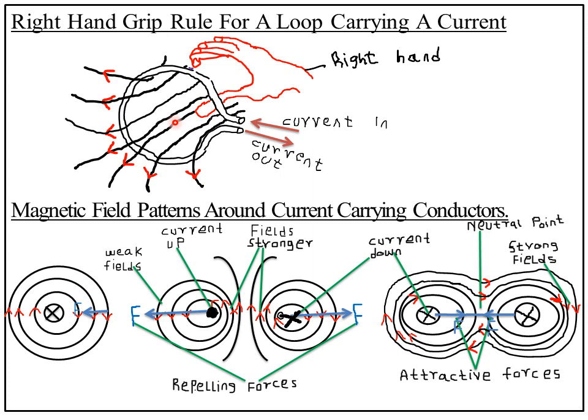We can also apply the same principle for magnetic field patterns around current-carrying conductors. Whenever you see a cross (×) symbol, it means the current is moving into the paper — that is, downwards into the paper.